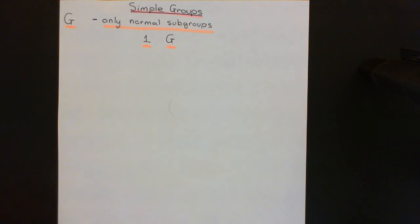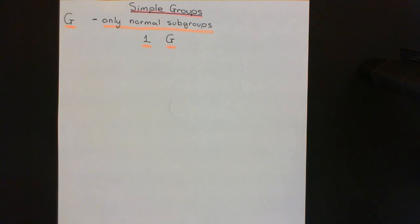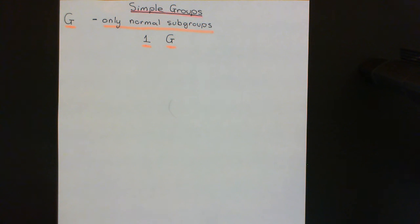It needs to be the case that you only have two normal subgroups: the trivial subgroup that just contains the identity element, and the improper subgroup which contains everything in the group.